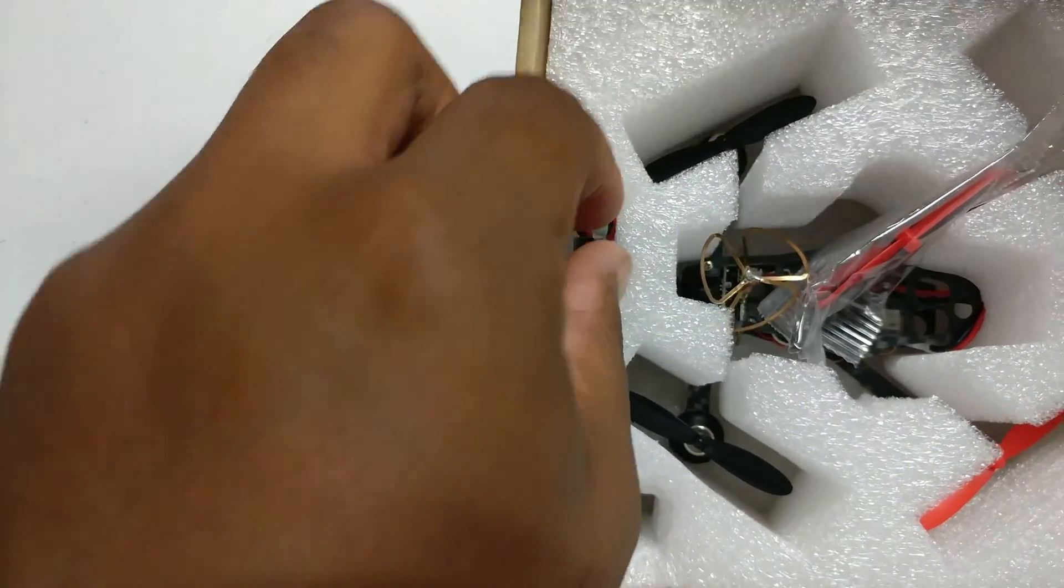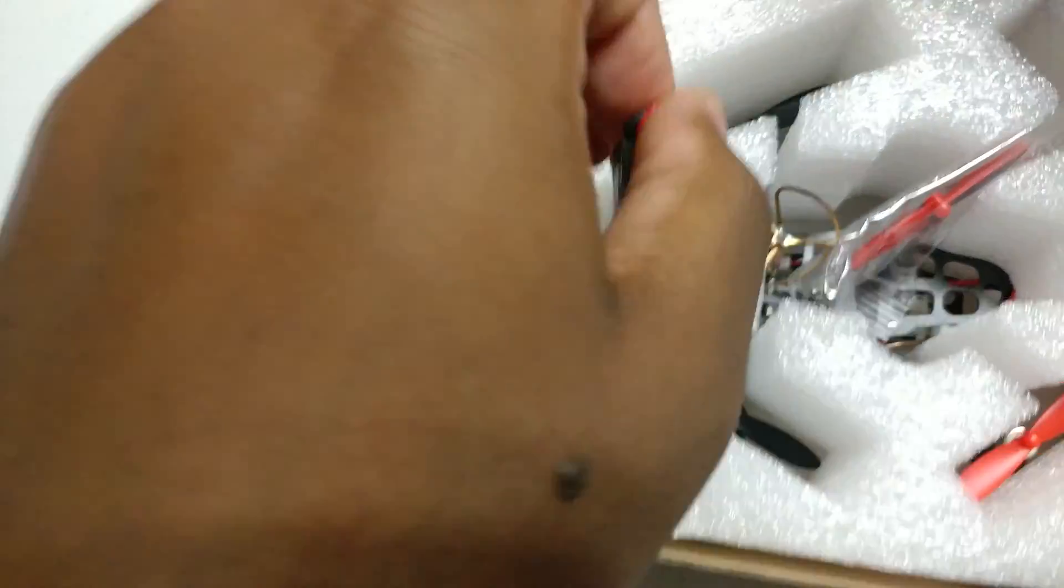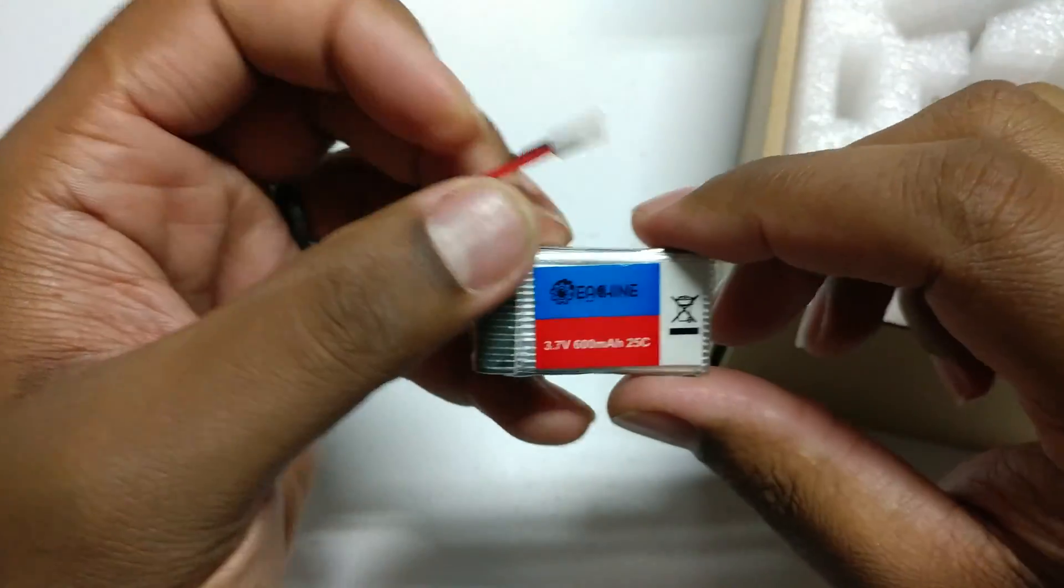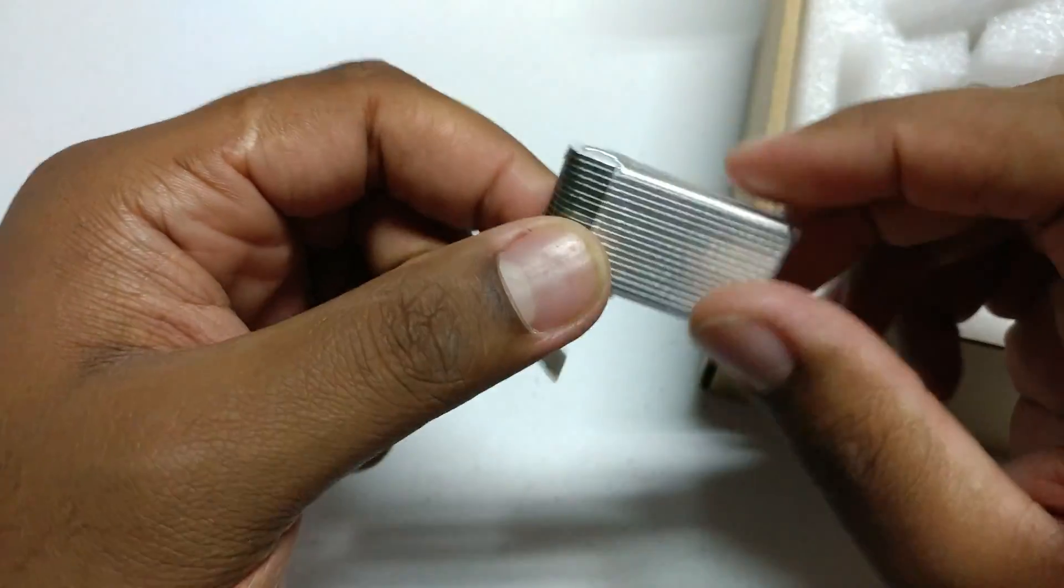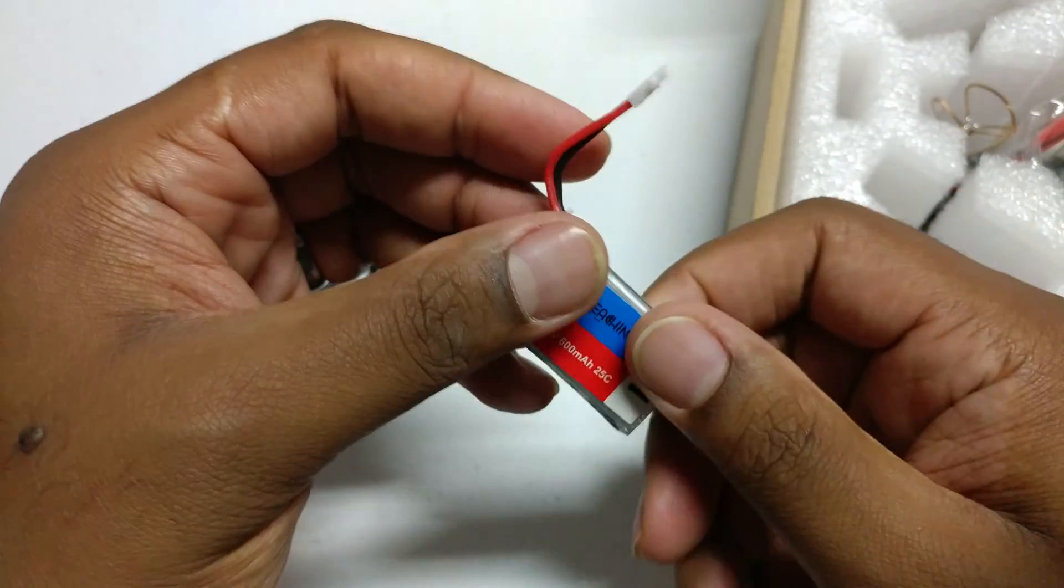You have your battery in here. So this is going to be a E-Sheen branded 3.7 volts, 600mA 25C battery. Pretty basic battery here.